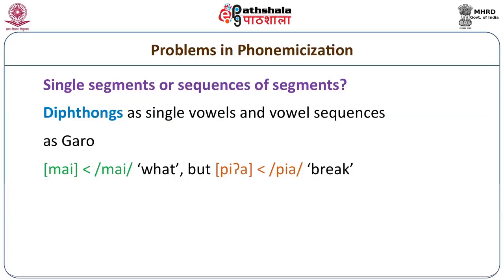Let's take a look at the vowel sequences versus diphthongization problem. In some languages it is somewhat less difficult to decide whether a sequence of vowels is a sequence or a diphthong. Similarly, whether complex consonants are single consonants or a combination of two consonants. Let's look at some of this data for diphthongs. In Garo, a diphthong occurs with hiatus, that is, absence of a break.